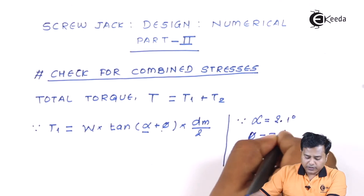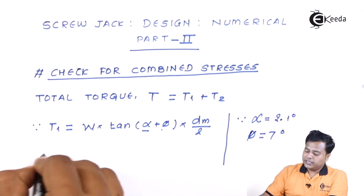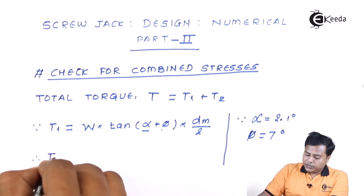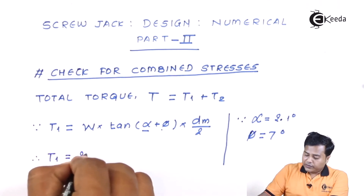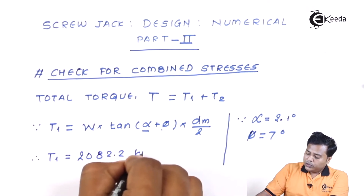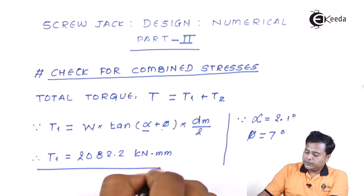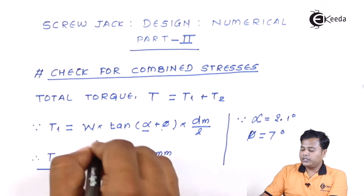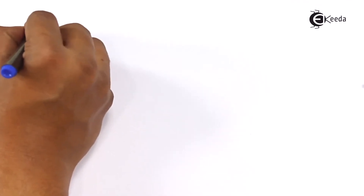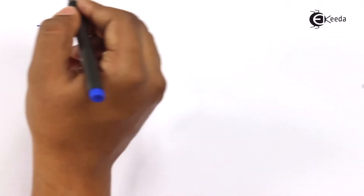The value of α is 2.1° and the value of φ is 7°. These are from the standard selection, so we can use those values directly. Substituting these values, we get T1 equal to 2082.2 kN·mm.